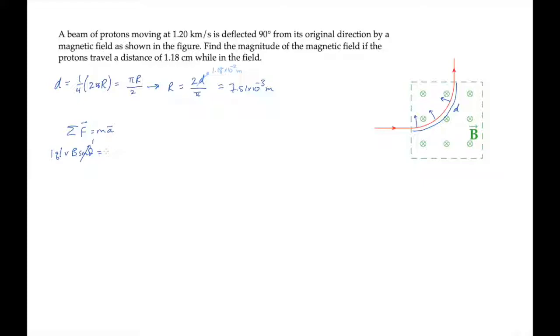And the acceleration is the centripetal acceleration, v squared over r. Now we can solve for the magnetic field magnitude and substitute all the known values.